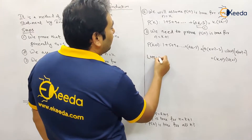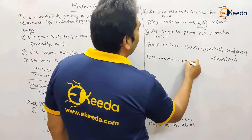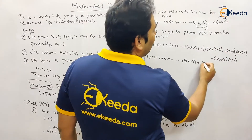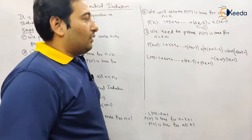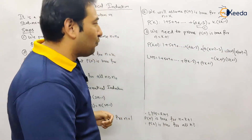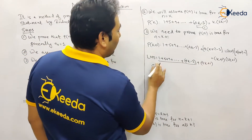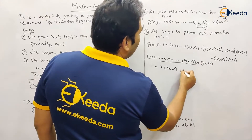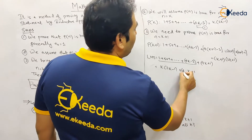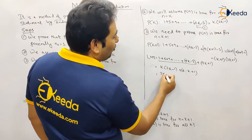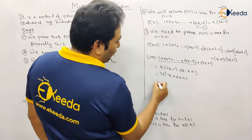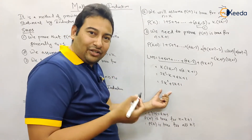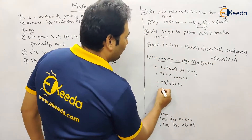Now let us prove LHS. LHS = 1 + 5 + 9 + ... + (4k − 3) + (4k + 4 − 3) = 1 + 5 + 9 + ... + (4k − 3) + (4k + 1). Using equation one, the first part equals k(2k − 1), so LHS = k(2k − 1) + (4k + 1). Expanding: 2k² − k + 4k + 1 = 2k² + 3k + 1. Factoring this quadratic gives (k + 1)(2k + 1).